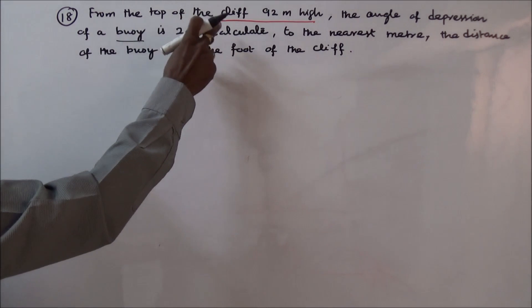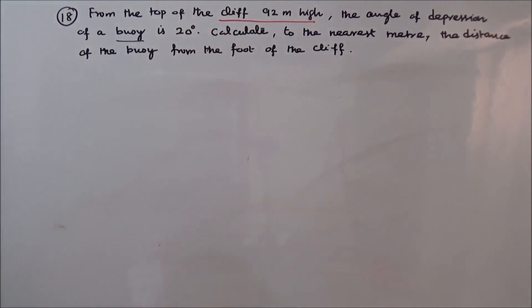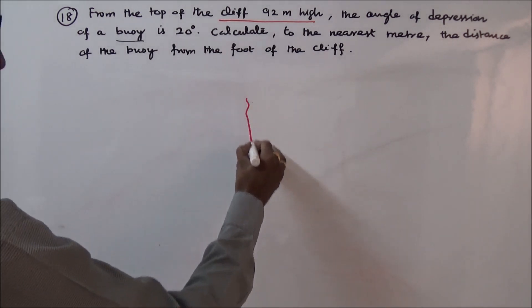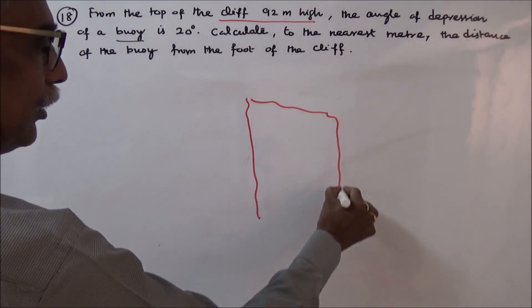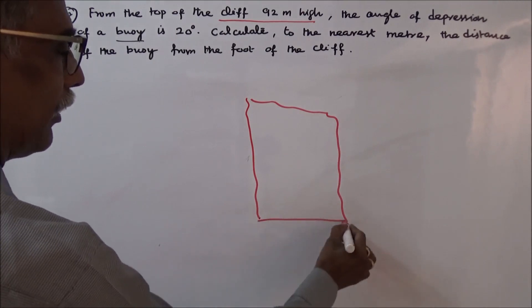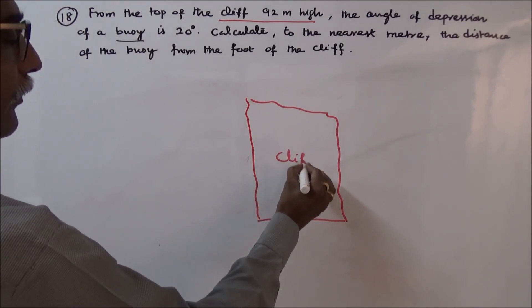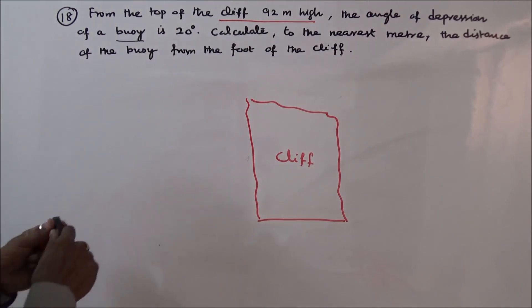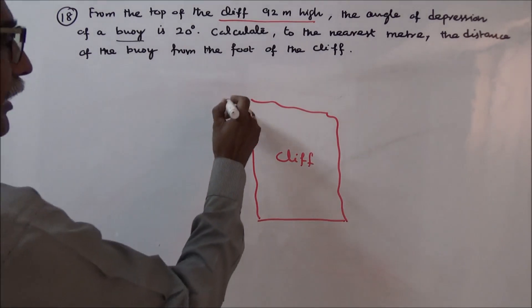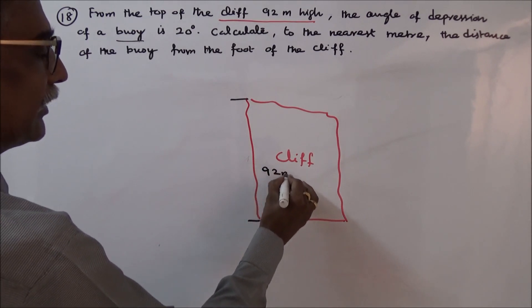From the top of that cliff, 92 meters high — so the cliff is 92 meters high. The height of the cliff is 92 meters.